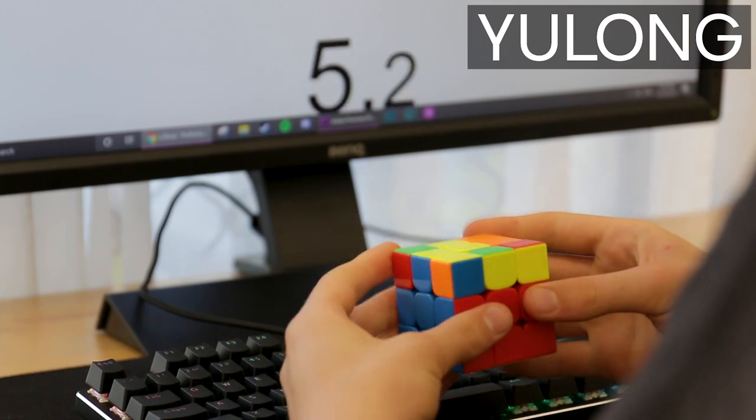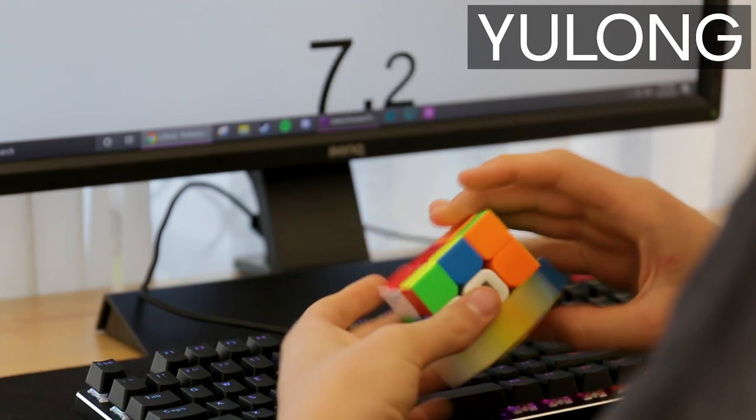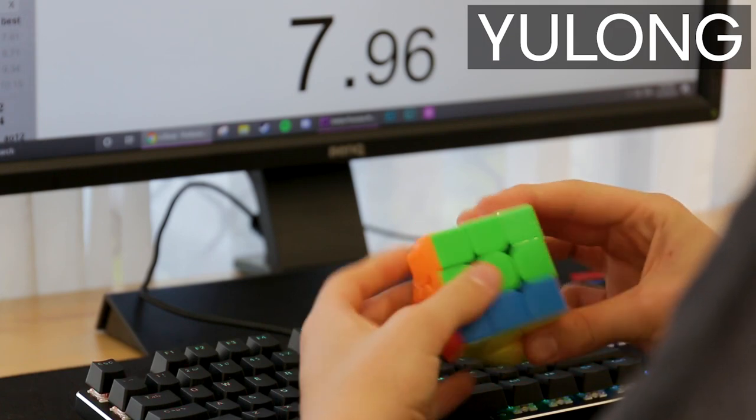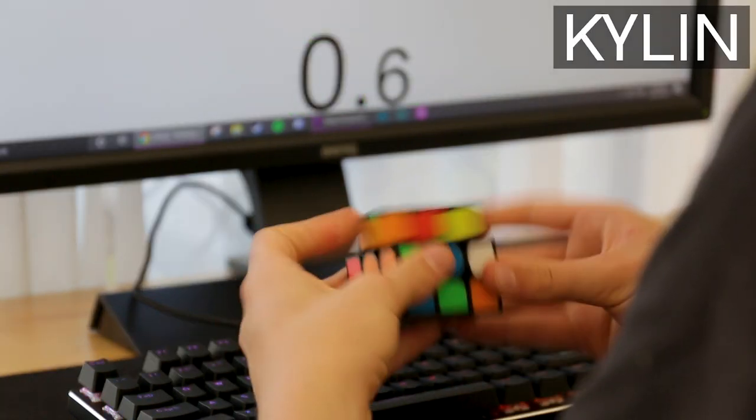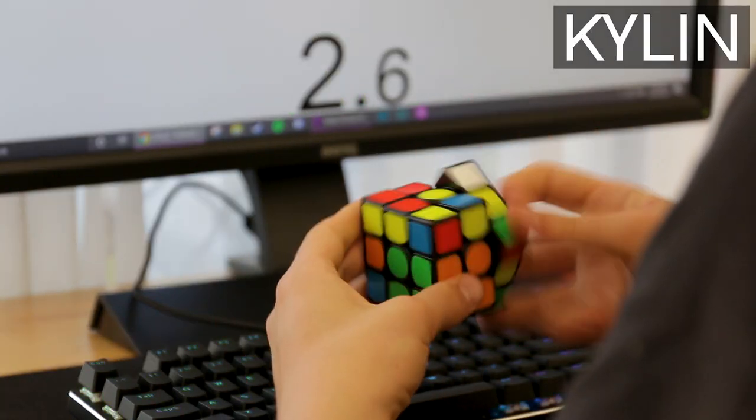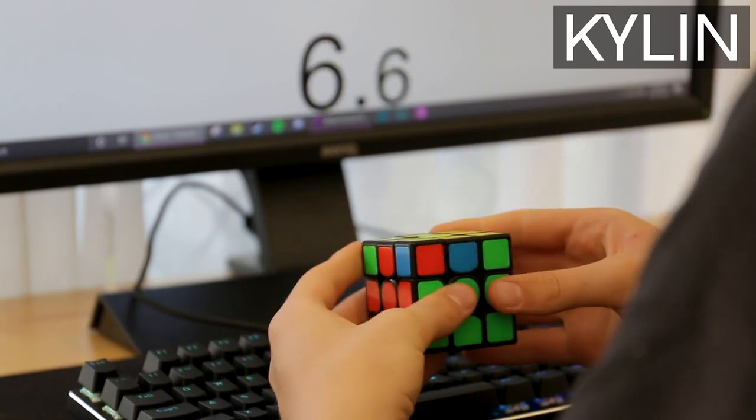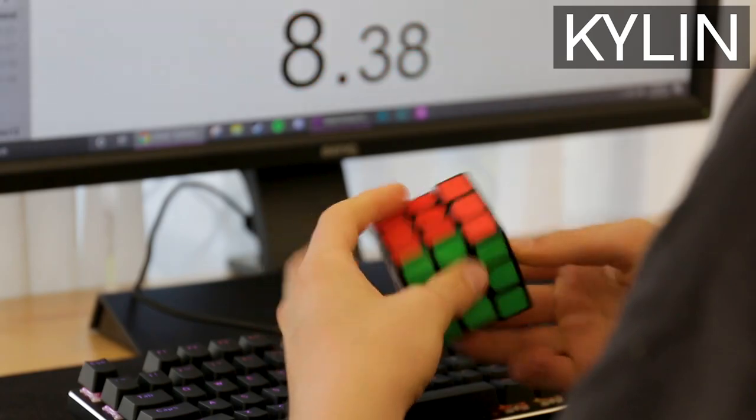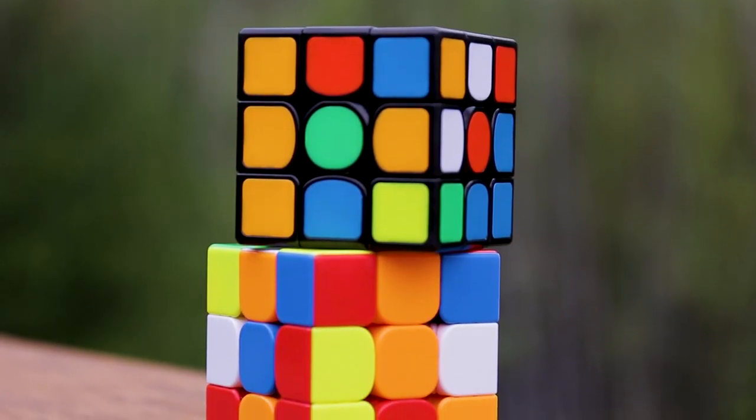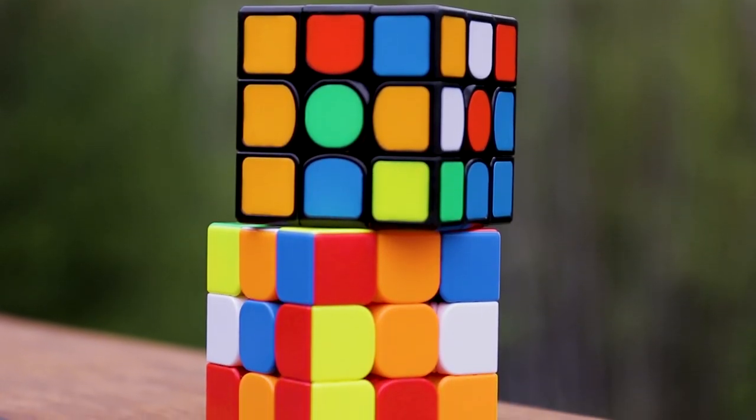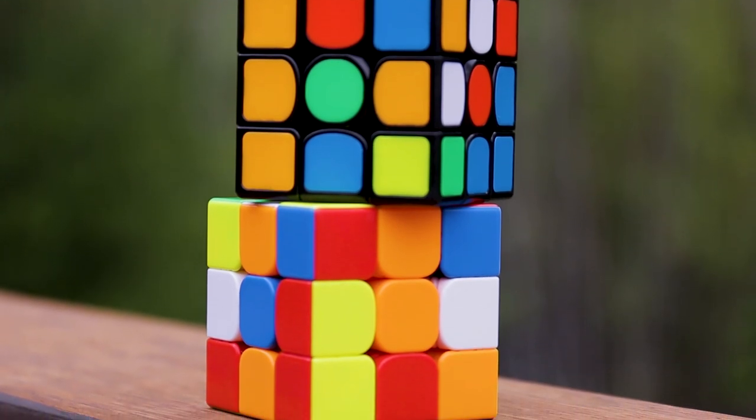My personal pick out of these two is the Yulong, which also happens to be the cheaper cube, just because it's much faster and has stronger magnets. The Yulong isn't as smooth as the Kailin, but I really do like its turning and it's become one of my main travel cubes just because it's so cheap and I can get times on it very similar to what I would on my main cube. But now let's hear what another great youtuber thinks. Introducing the one and only Tingman.